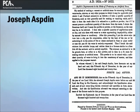Joseph Aspdin, an English mason, obtained a patent in 1824 for Portland cement. The name came from the resemblance to limestone quarried from the Isle of Portland, which had been used as a premier building stone since Roman times.